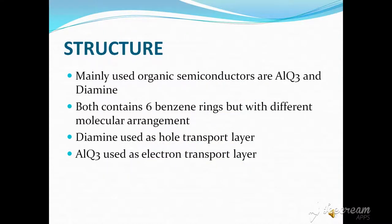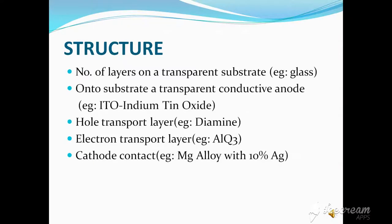Looking at the structure of OLED, the mainly used organic semiconductors are Alq3 and diamine. Both contain 6 benzene rings but with different molecular arrangements. Diamine is used as the hole transport layer and Alq3 is used as the electron transport layer. OLED has a number of layers on a transparent substrate like glass — a transparent conductive anode like indium tin oxide, then a hole transport layer like diamine, then an electron transport layer like Alq3, then a cathode contact like magnesium alloy with 10% Ag.